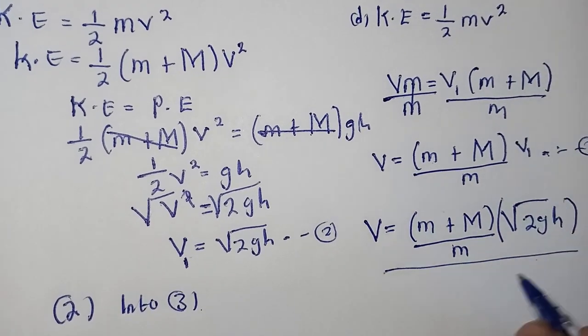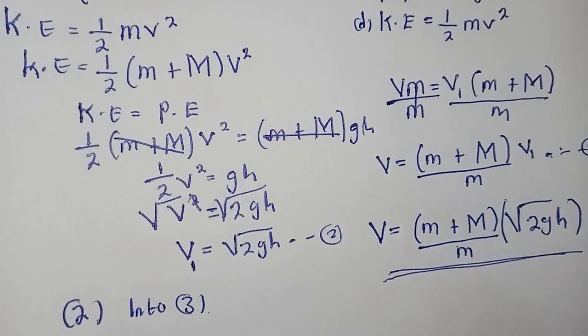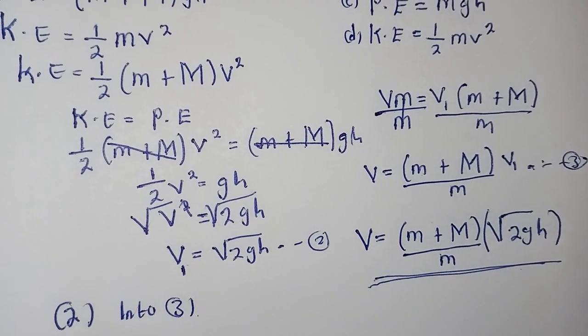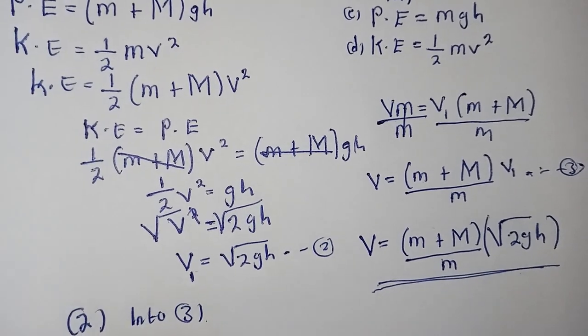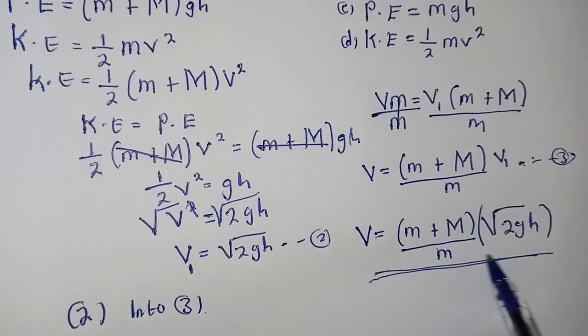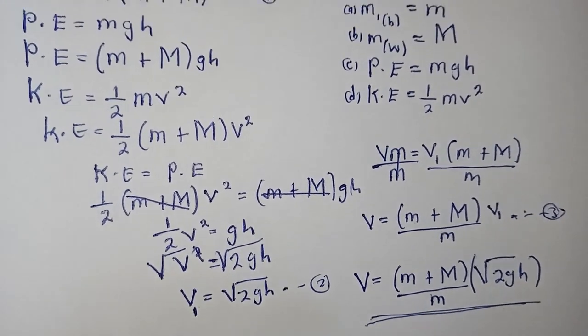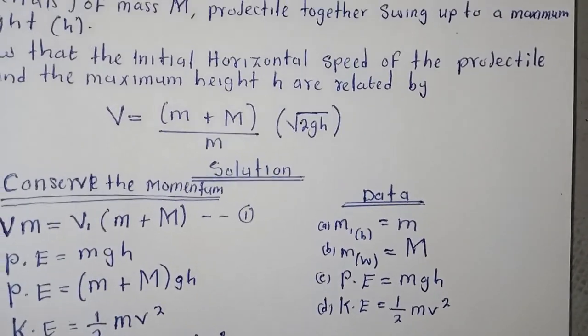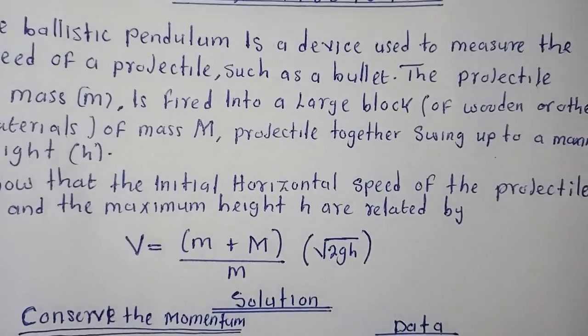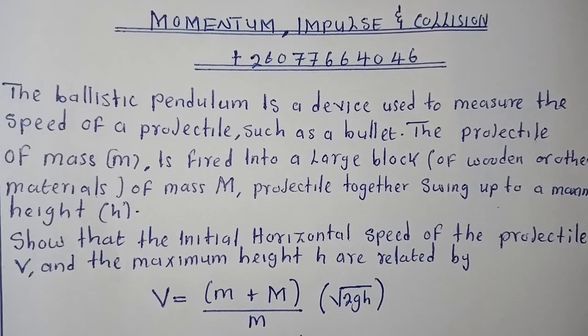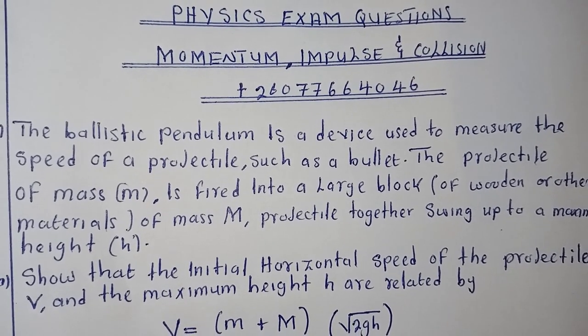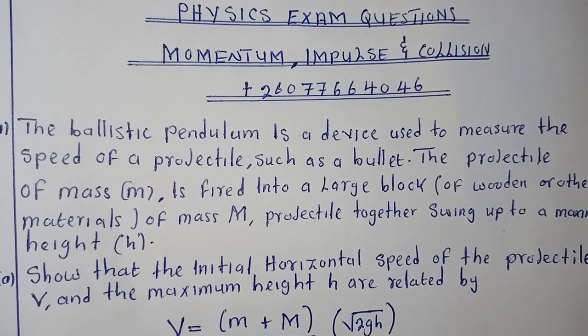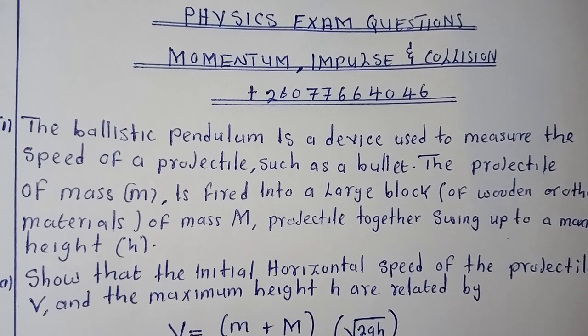And that is our final answer. We have proved, we have shown that there is a relationship between this velocity and the height, and it is represented by this formula. So this is how you go about this question. It's very simple. Don't forget to subscribe to my YouTube channel. Remember we're doing the physics Olympiad, so make sure that you subscribe so that you don't miss out. Thank you so much.